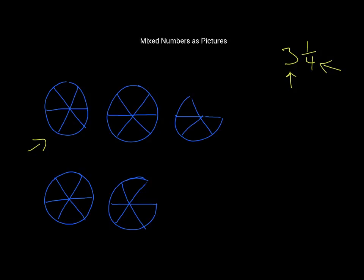The first thing you need to do is count up the number of pieces in the circles. Counting the first circle: 1, 2, 3, 4, 5, 6. Check to make sure these are all the same — 1, 2, 3, 4, 5, 6. Yes. And the partial circle: 1, 2, 3, 4.